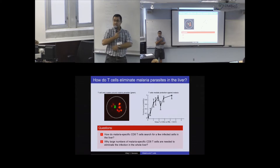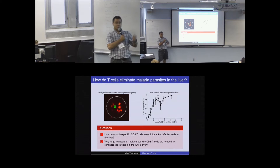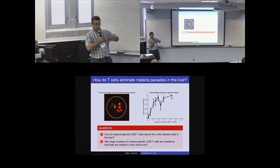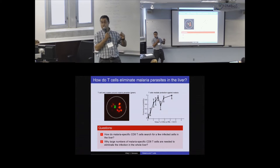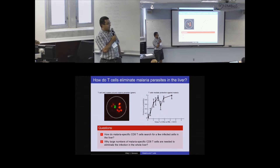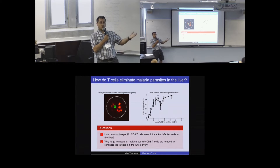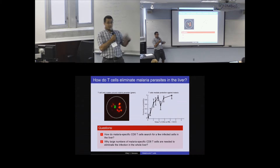My name is Vitaly Genosov, from the Department of Microbiology and Math, with expertise in immunology. My project involves liver stage malaria. Malaria parasites are transmitted by mosquitoes; when an infected mosquito bites a host, it injects sporozoites into the skin, which migrate via blood to the liver and infect hepatocytes. After two days in a mouse, the sporozoites differentiate and enter the blood, causing blood stage malaria.